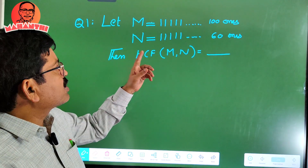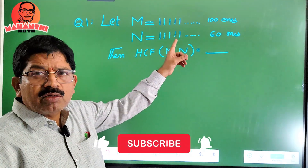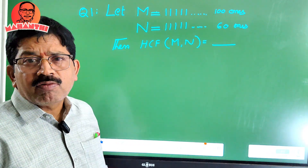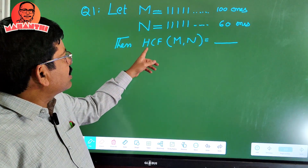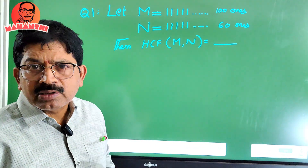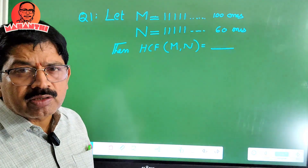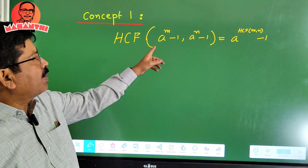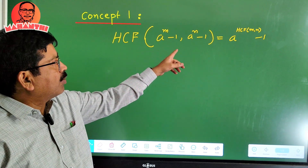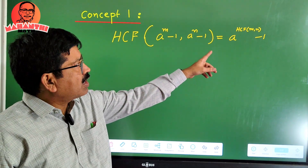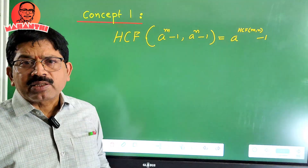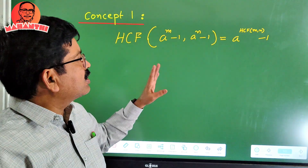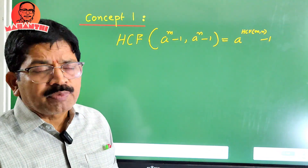Two numbers are given: m equals 111...1 with 100 ones, and n equals 111...1 with 60 ones. The question is: what is the HCF of m and n? This requires one important concept — the HCF of (a^m - 1) and (a^n - 1) equals a^(HCF(m,n)) - 1. We will use this concept to solve the problem.